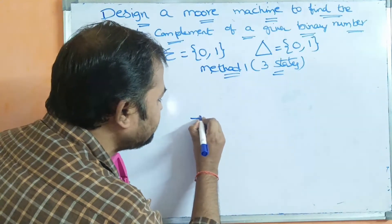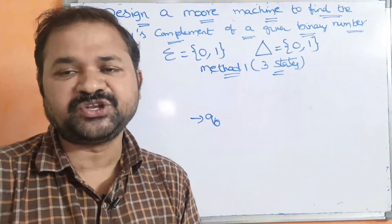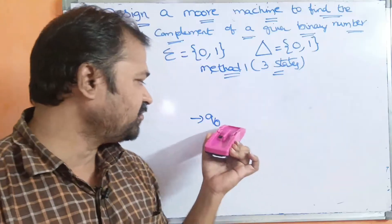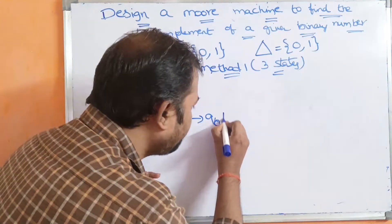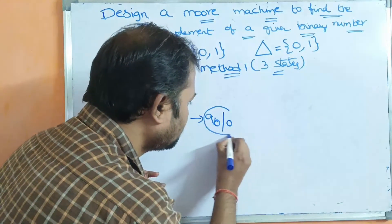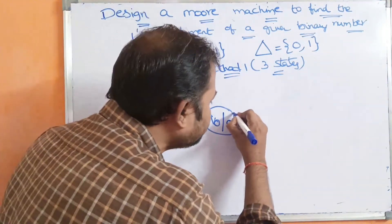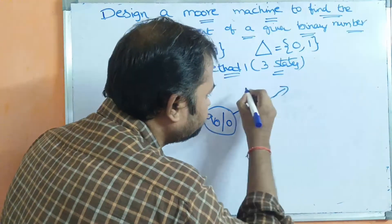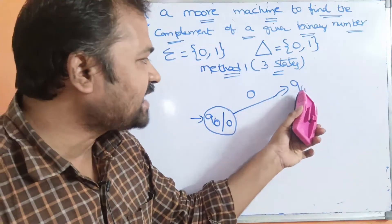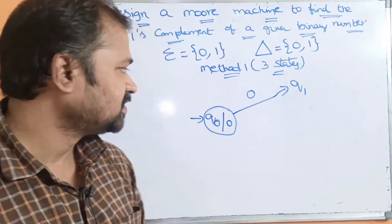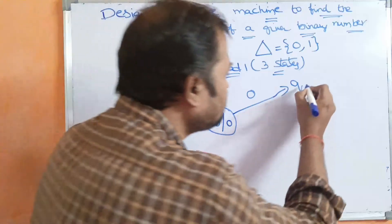Let the initial state be q0. Let the output of q0 be 0 — we can take the output as either 0 or 1 and change the transitions accordingly. If the input is 0, we go to a state called q1. q1 accepts 0 as input, and the output of q1 is 1.